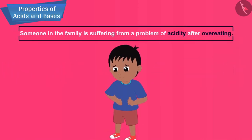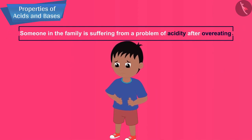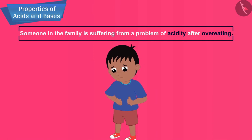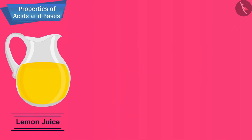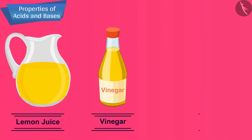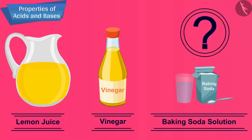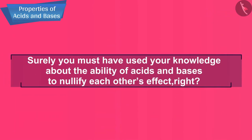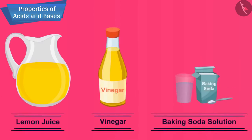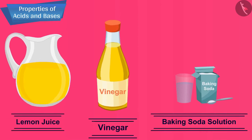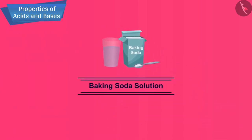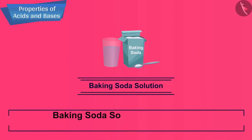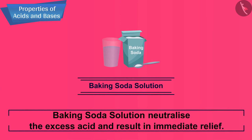If someone in the family is suffering from a problem of acidity after overeating, which of the following would you suggest as a remedy: lemon juice, vinegar, or baking soda solution? Surely you must have used your knowledge about the ability of acids and bases to nullify each other's effect. When someone is suffering from acidity, the remedy is baking soda solution, as this will neutralize the excess acid and result in immediate relief.